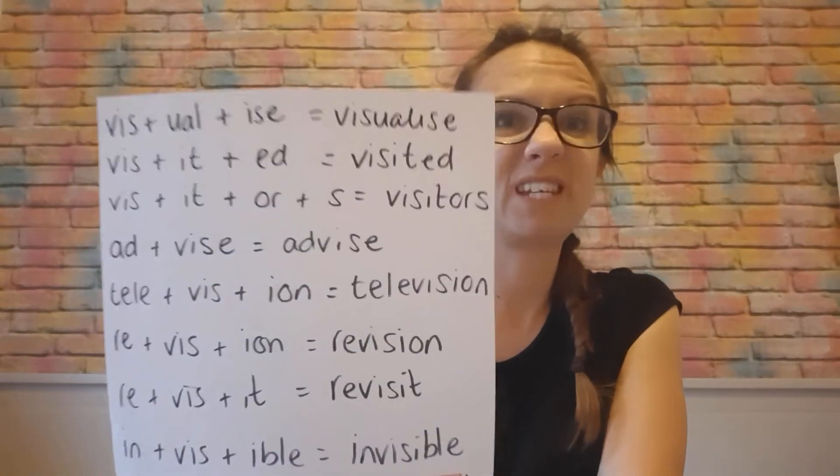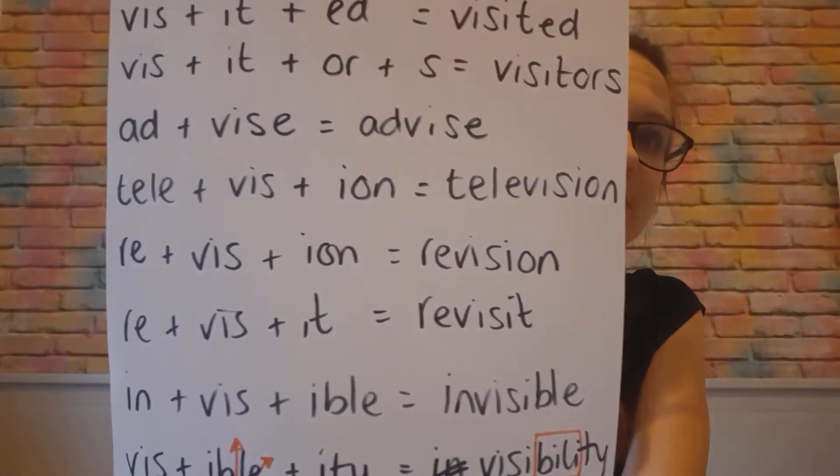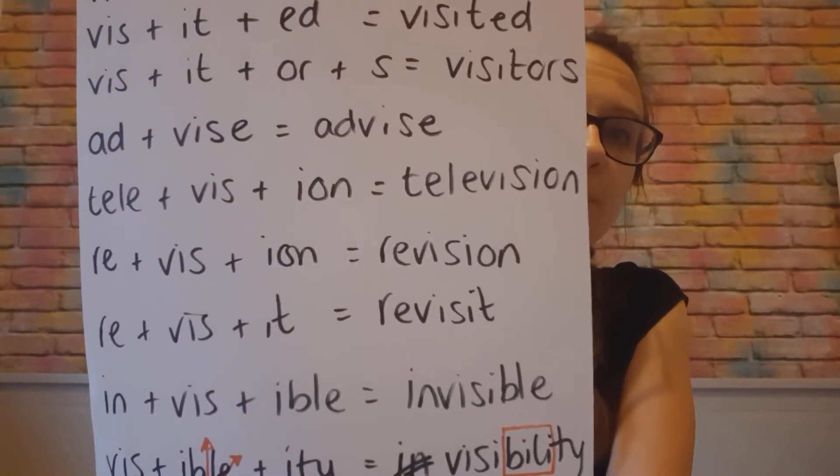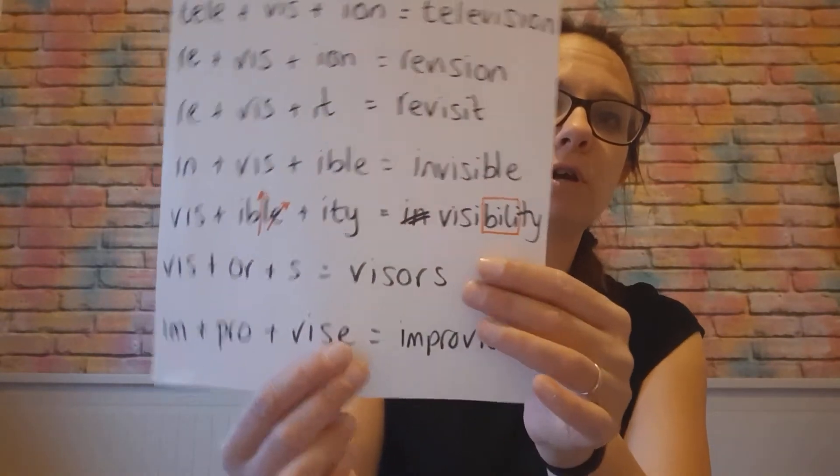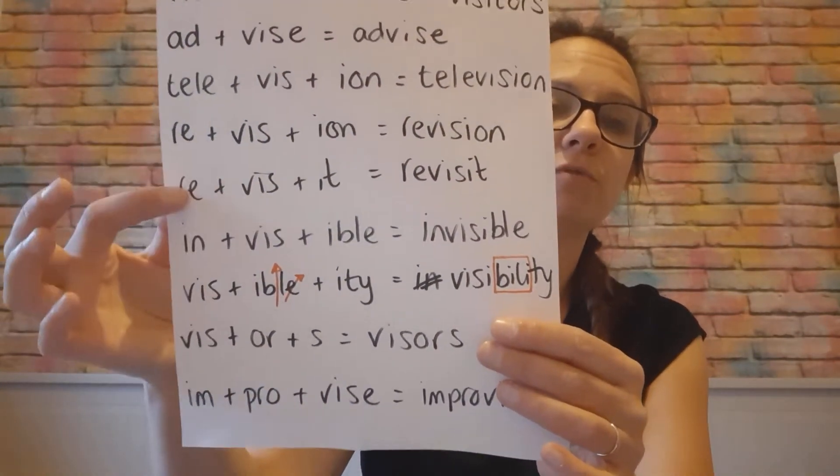'Advise' - so 'ad' is that prefix meaning to or towards. So actually advising somebody is giving them advice, helping them see something a bit more clearly. 'Television' - that's that one there. 'Revision' - remember 're' meaning back or again. So 'revision' and 'revisit' kind of mean the same thing. We have our revisits at school where we go back over things we've done before, so we're literally seeing it again.